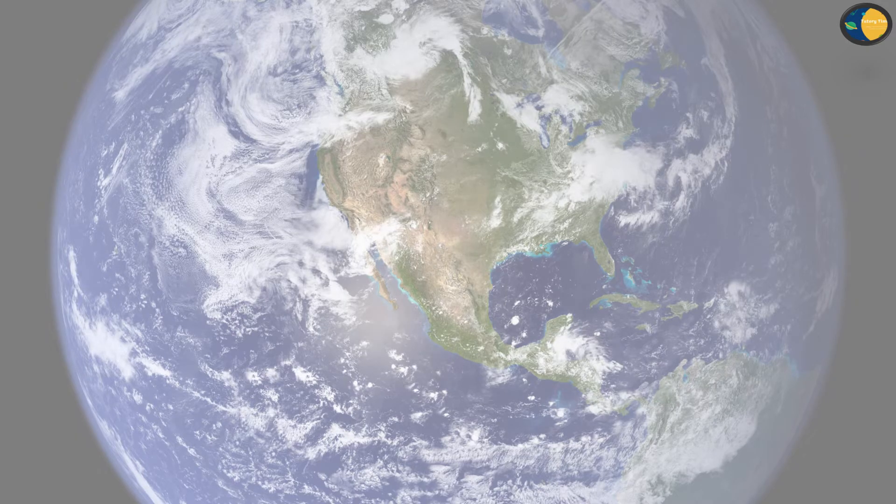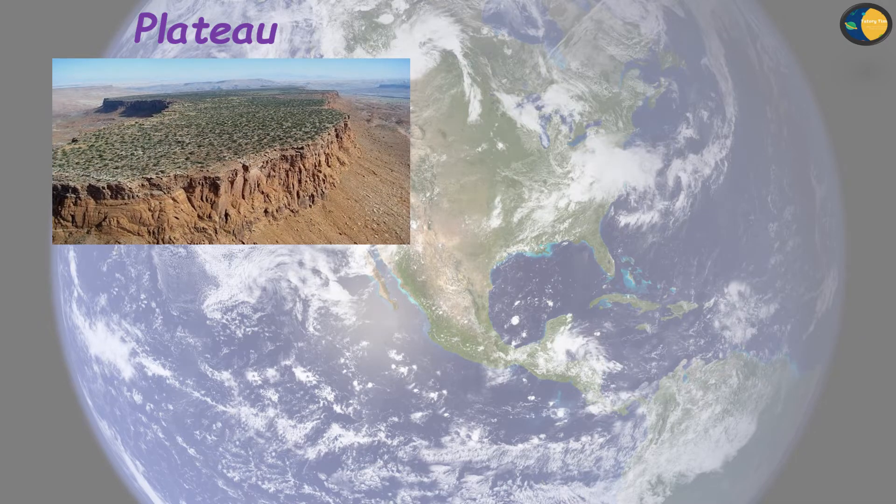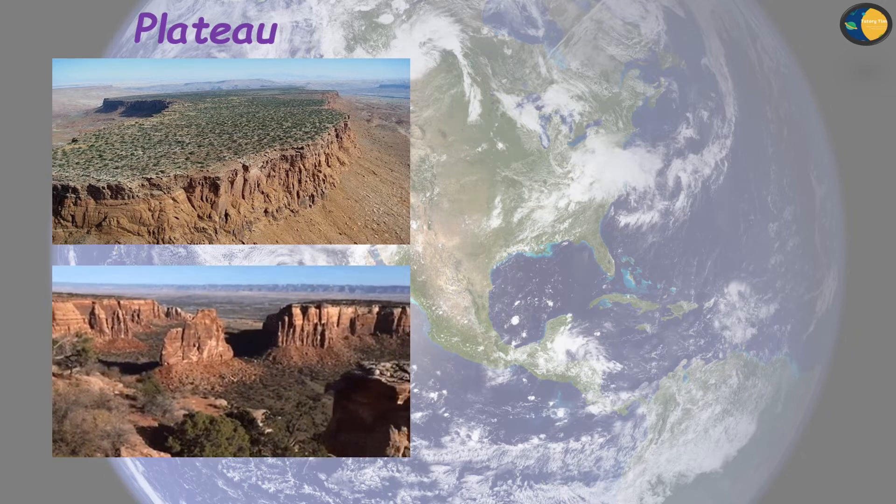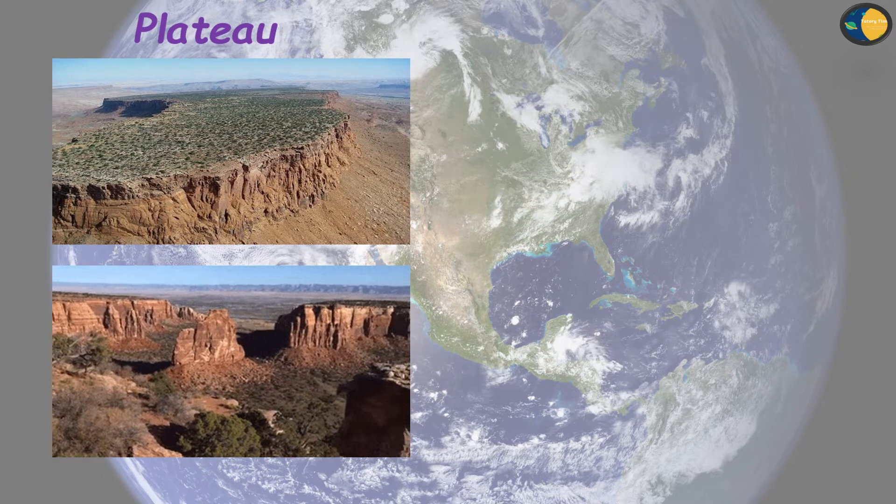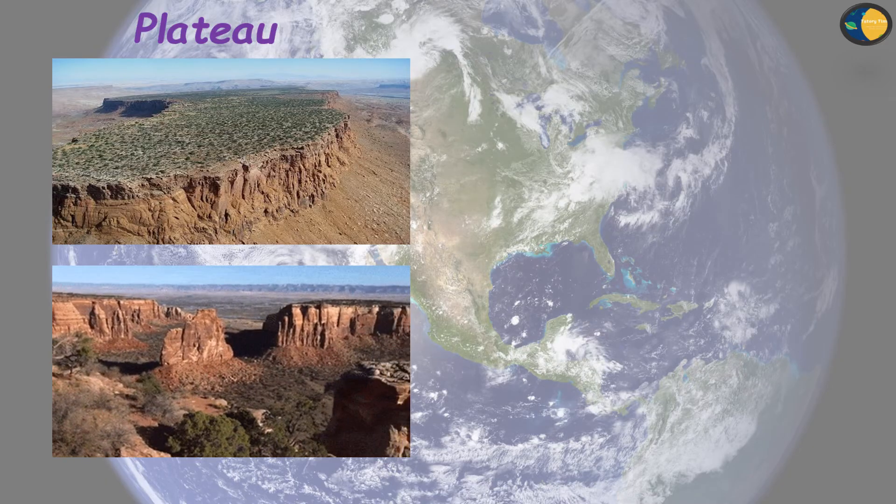Next we have plateau. A plain on a hill or a mountain is called a plateau. The plateau looks like a table so it is also called table land. Next is desert.